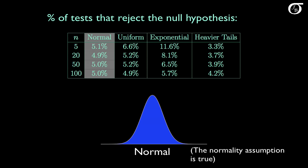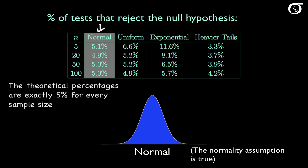In the first situation we are sampling from a normally distributed population, so the normality assumption is true. The percentage of tests that reject the null hypothesis is very close to 5%. Theoretically they should be exactly 5%; the small differences we observe are just due to sampling variability.